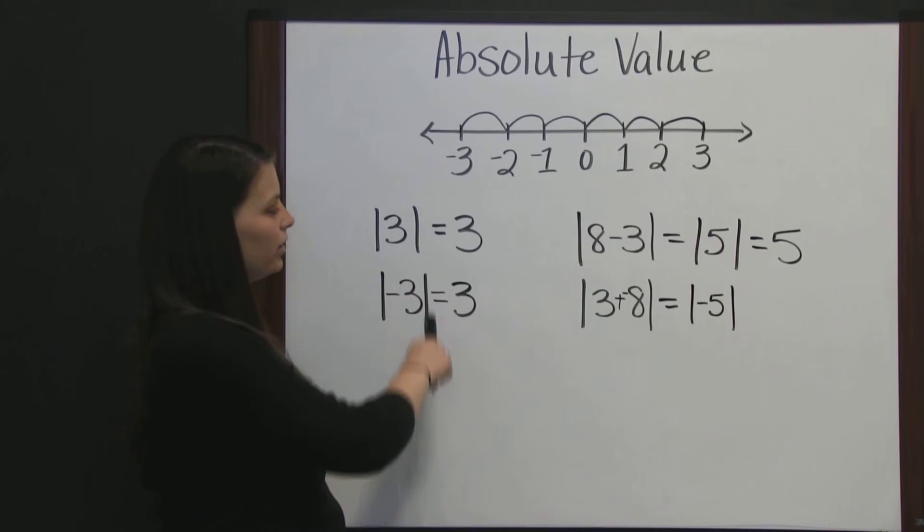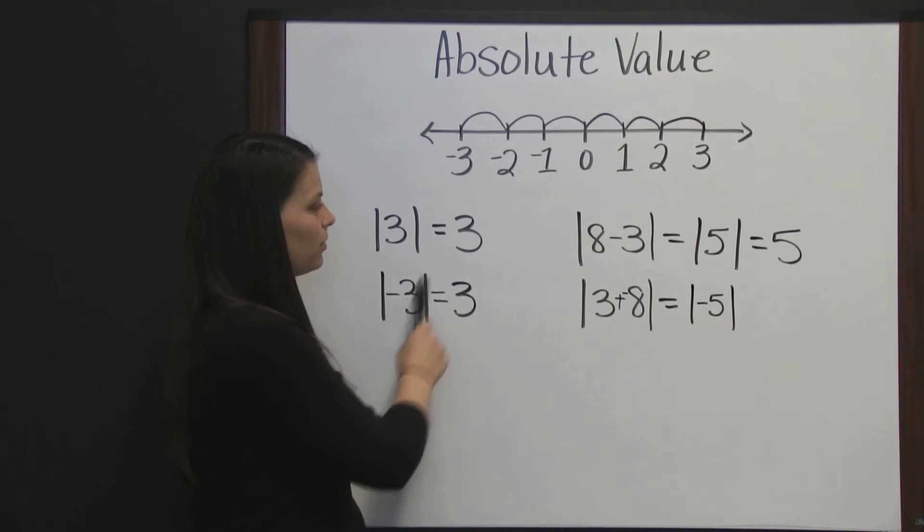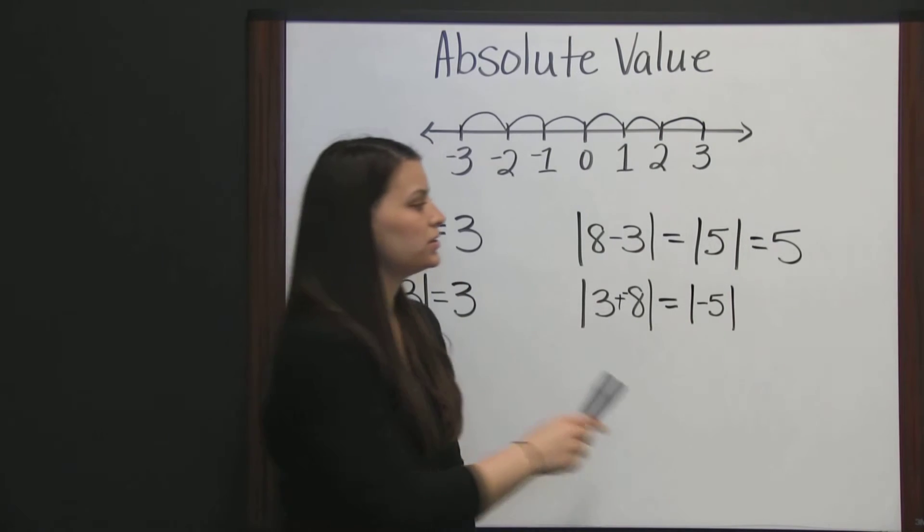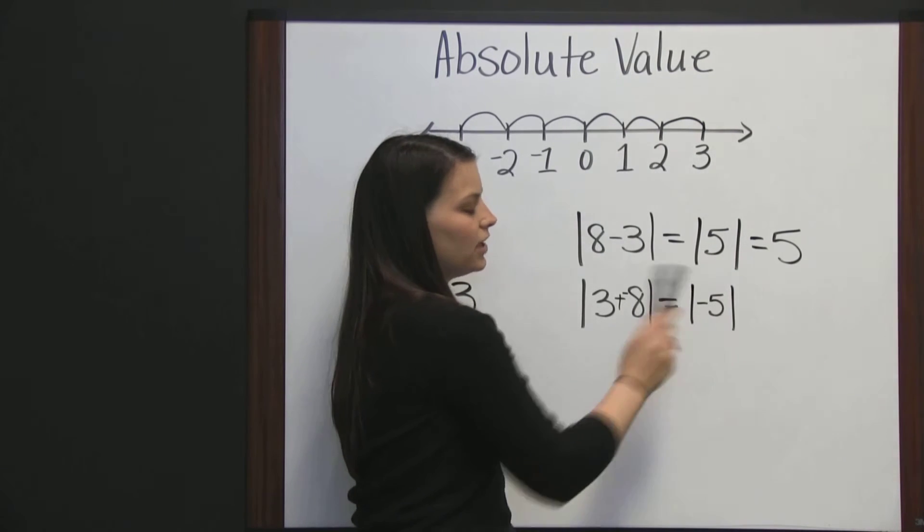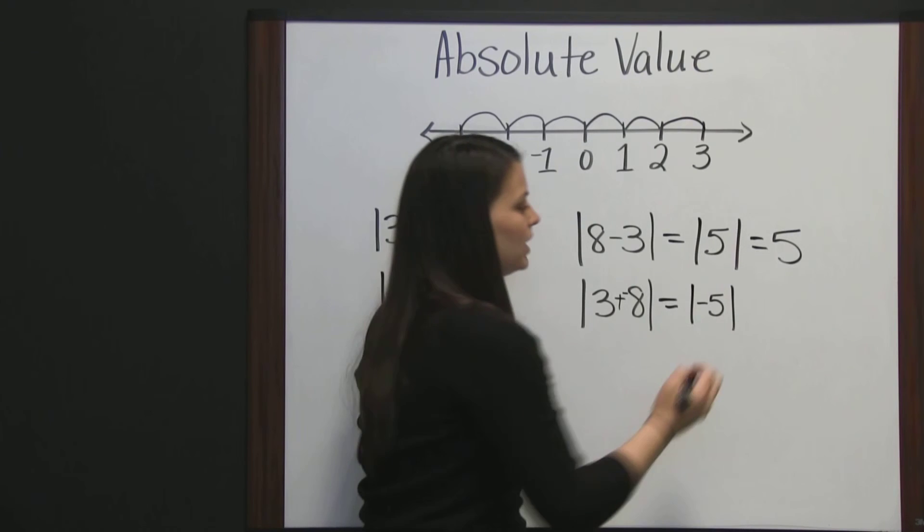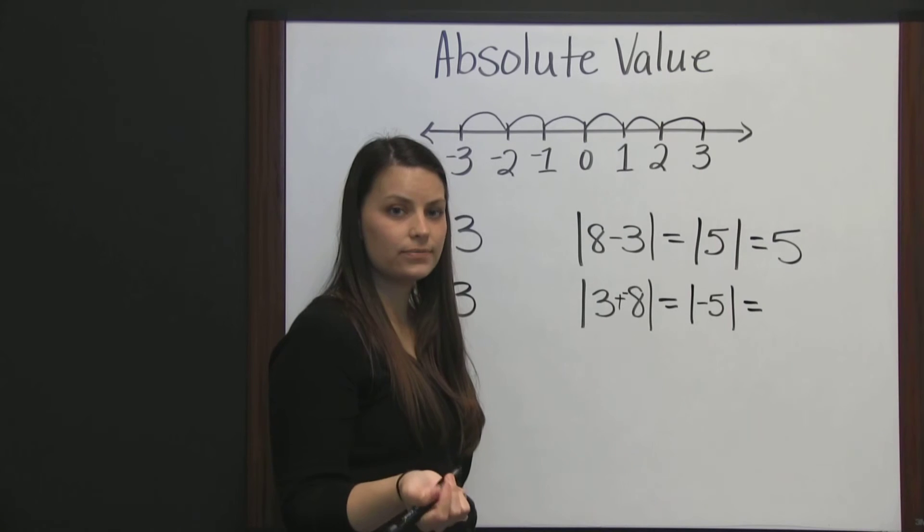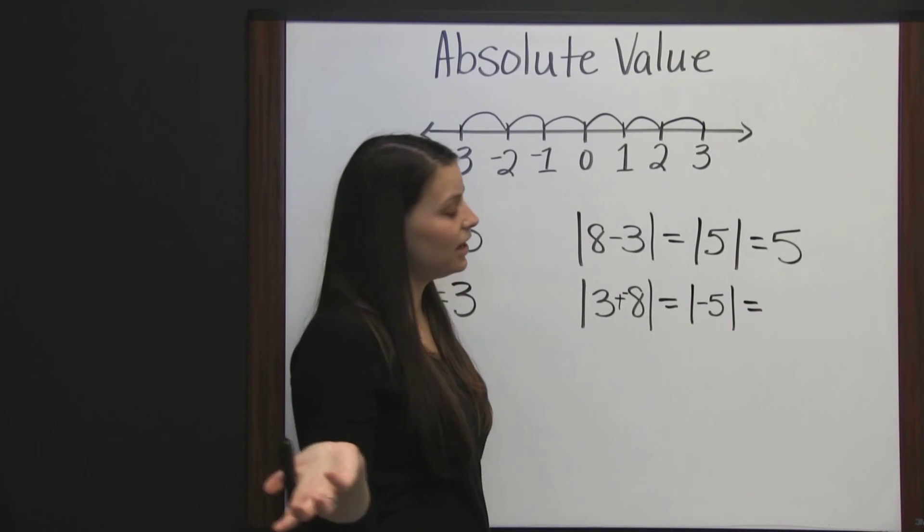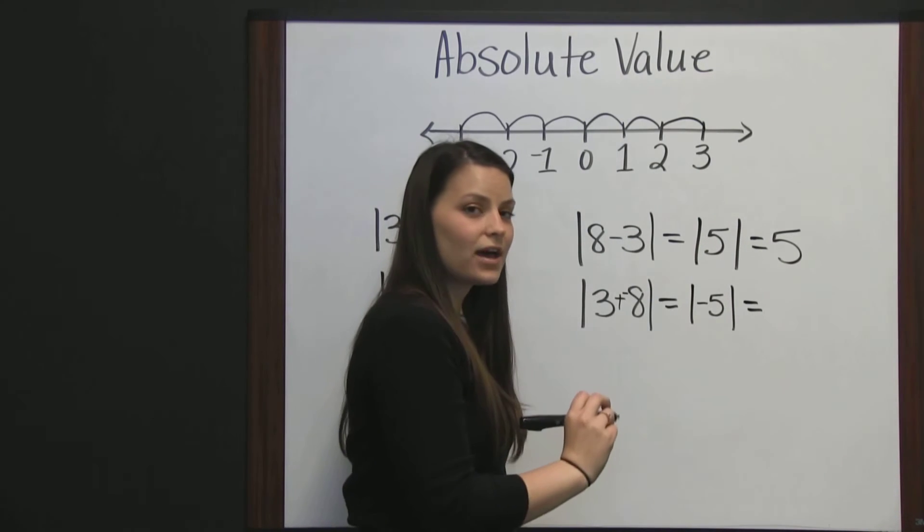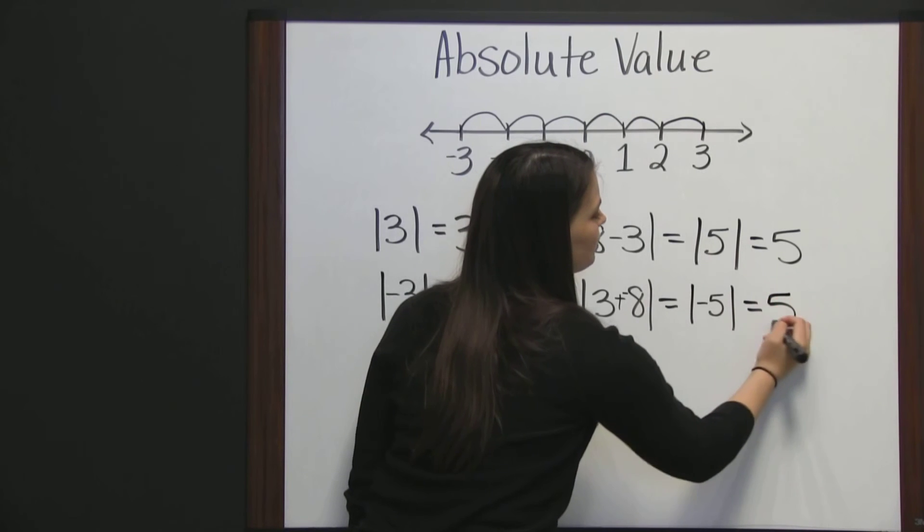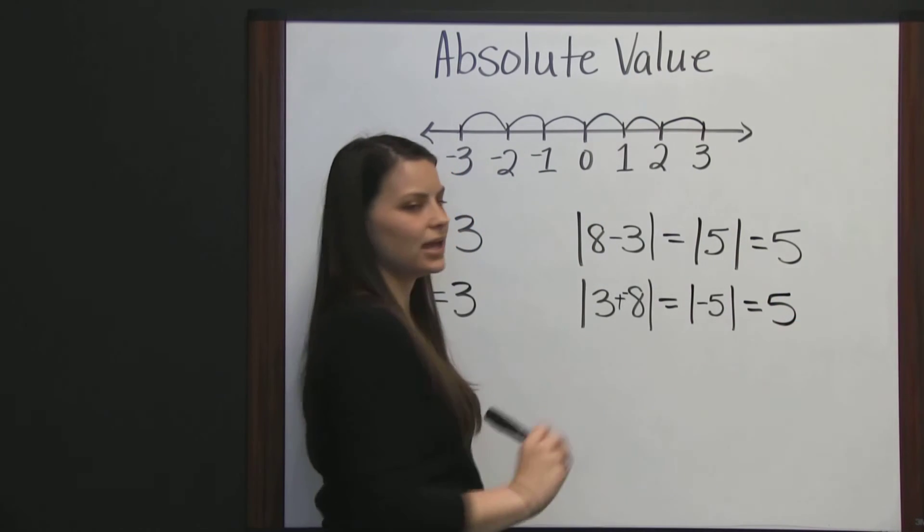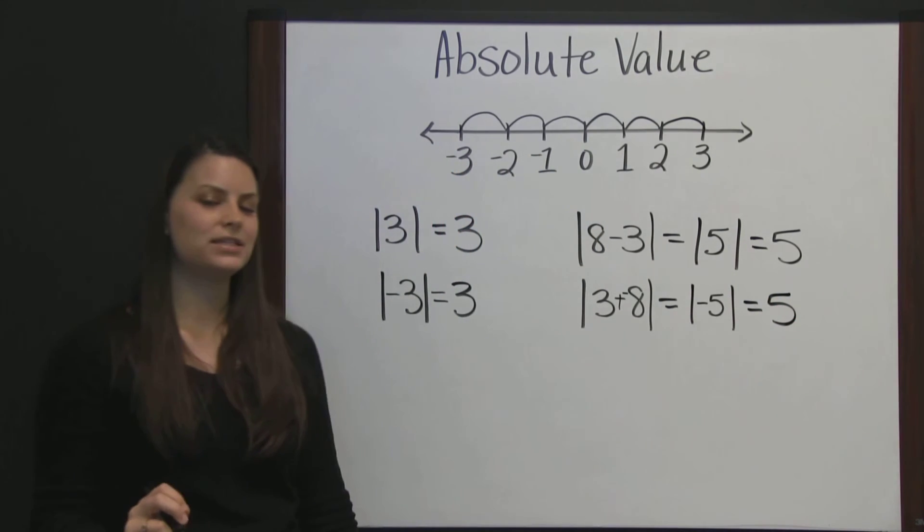And, like we talked about over here, the absolute value of a number and its negative counterpart are the same. So, the absolute value of five and negative five is the same, because again, absolute value is the distance from zero, and distance can never be negative. So, the absolute value of negative five is also five, since negative five is five places from zero.